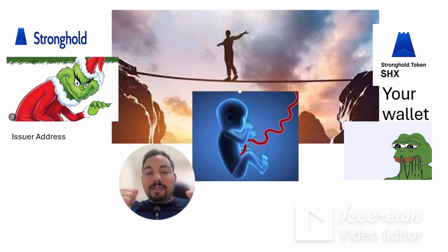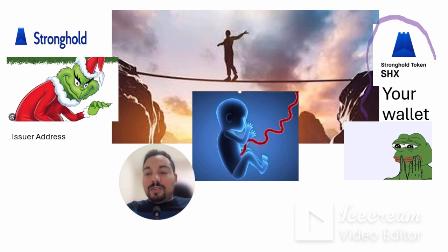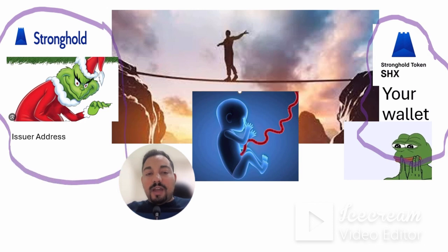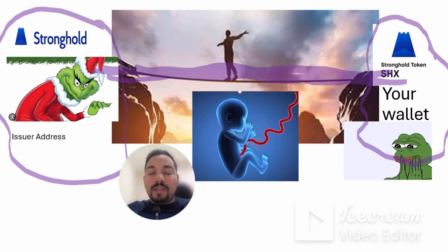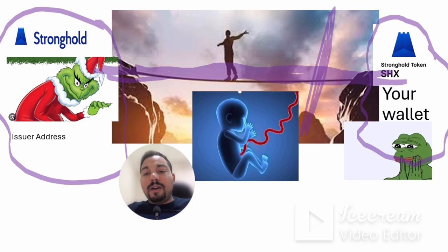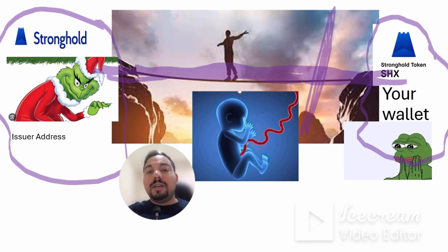The reason you would want to disable the trust line is — let's say you're holding Stronghold — at any time an issuer address, not specifically just Stronghold but any issuer address, can actually claw back, freeze you, and do other things. Think of a trust line like a bridge connecting you and the issuer; as long as that bridge is up you can send tokens and do whatever. But once you actually hold the token, ideally you should break this link — think of it like an umbilical cord — so that you are separated from the issuer address and any actions they may want to take. You can always reactivate the trust lines when you need to send it.